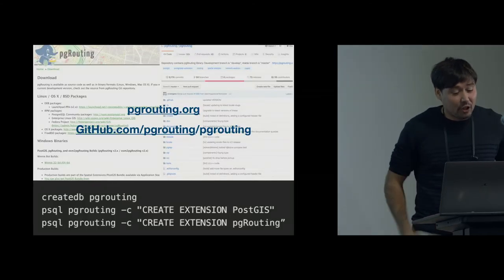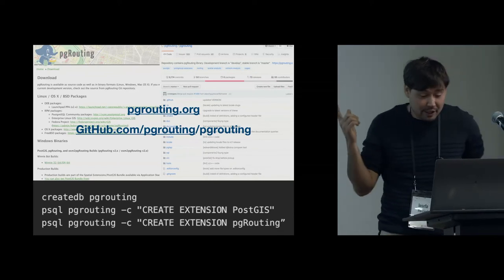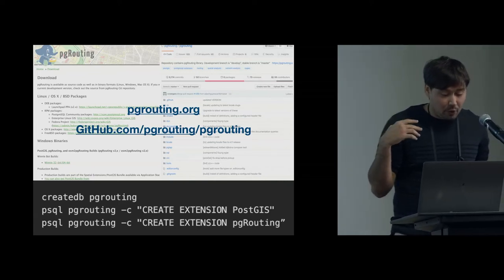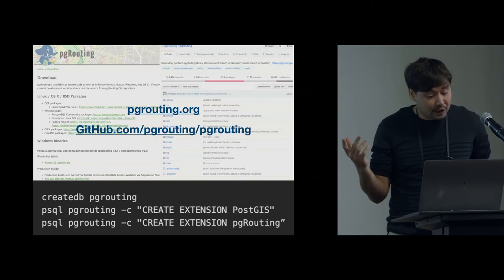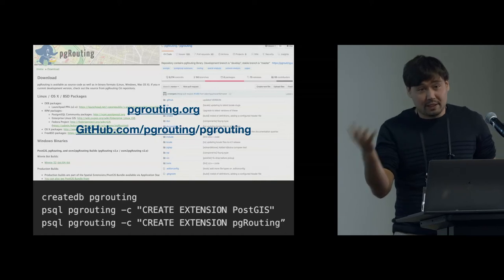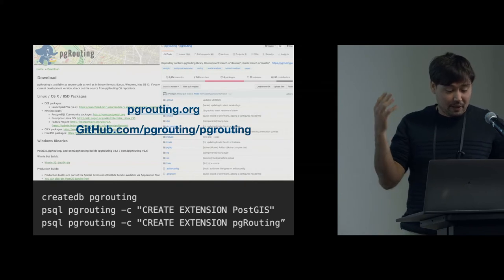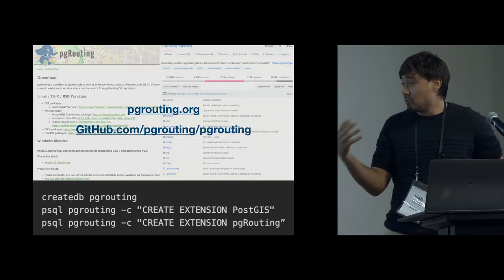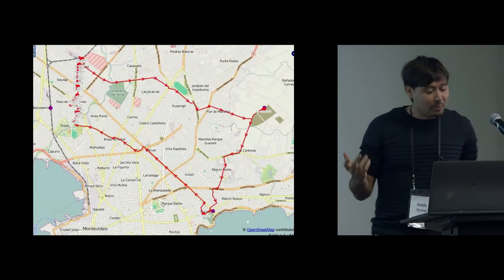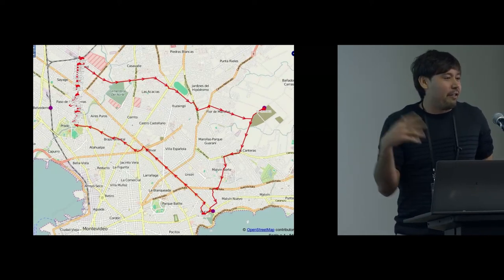You can install PG routing by downloading its binaries. Check out the website or GitHub repositories. You can install it on Windows, Linux, or OSX. Very simply: install Postgres, install PostGIS, install PG routing, then create your PG routing database, add your extensions, and you're good to go. There are also plugins for tools like QGIS so you can use OpenStreetMaps and others to visualize your routes.